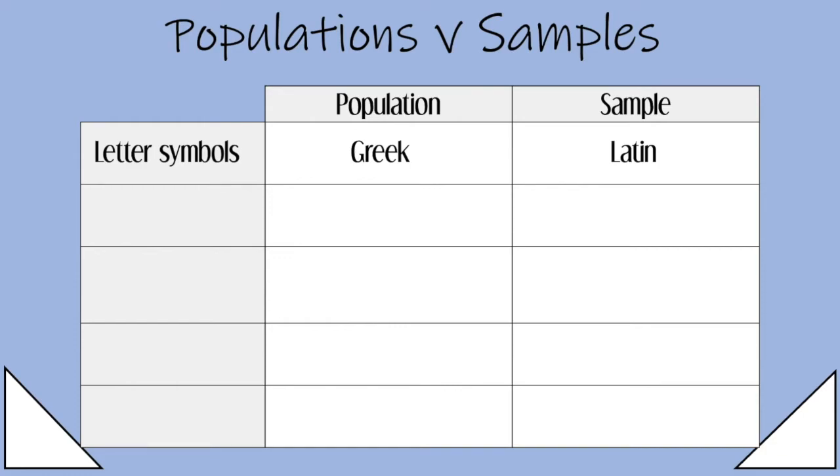If letters are the same, we can use capital for population and lowercase for sample. For example, the size of a data set is a capital N for the population, lowercase n for the sample. So just by glancing at a formula, you can see which group it applies to.